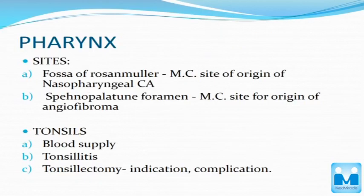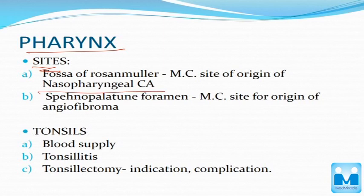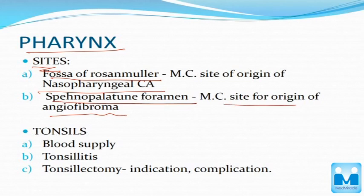Coming to the pharynx section, one thing you have to note is the sites. For nasopharyngeal carcinoma, it's the fossa of Rosenmüller. For juvenile nasopharyngeal angiofibroma, it's the sphenopalatine foramen, which is the most common site — so the site is important.